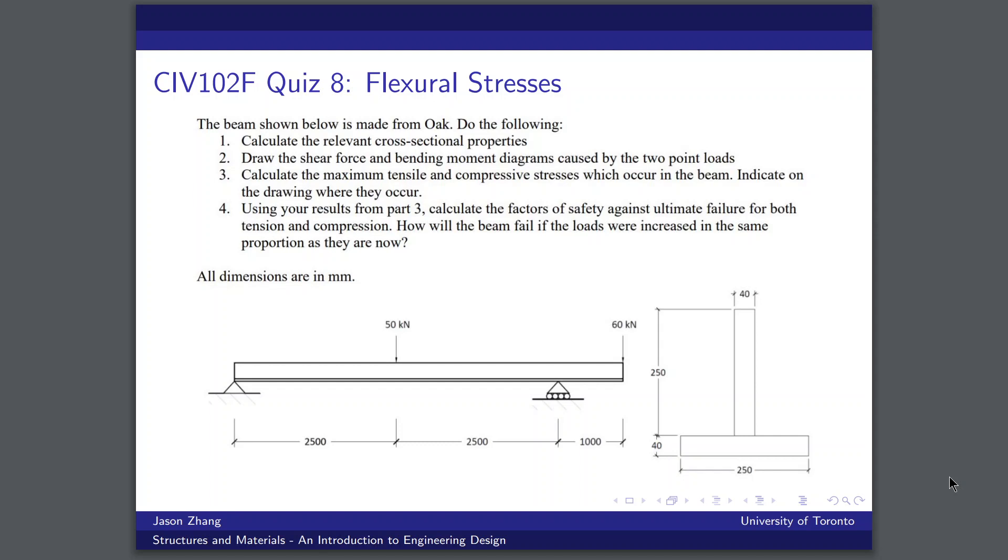So this is the quiz in its entirety. There are four parts to it. First of all, we need to calculate cross-sectional properties. Second, as I mentioned, draw the SFD and the BMD given the loading configuration. The third part is calculating the tensile and compressive stresses on the maximum of both and where they occur in the beam. And finally, we need to calculate the factors of safety and how the beam would fail if we increase the loads proportionally.